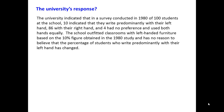So what was the university's response? The university indicated to Lily that in a survey they conducted in 1980 of 100 students, 10 indicated that they write predominantly with their left hand, 86 with their right hand, and 4 had no preference and used both hands equally. The school outfitted classrooms with left-handed furniture based on the 10% figure obtained in the 1980 study, and feels they have no reason to believe that the percentage of left-handed writers has changed since that time.